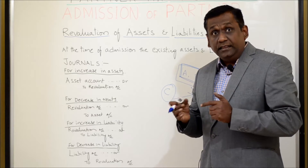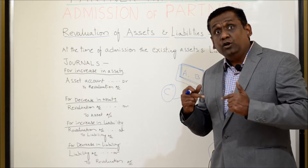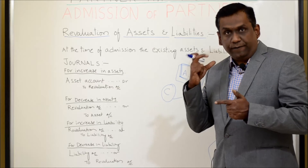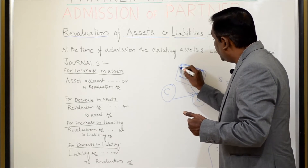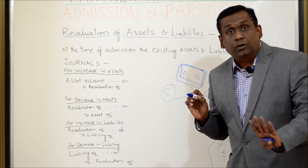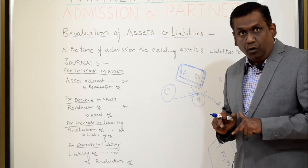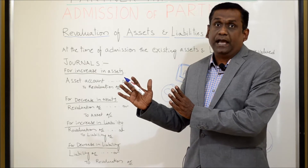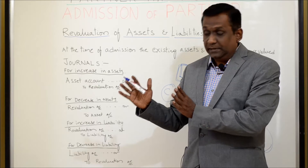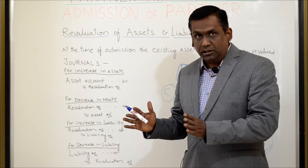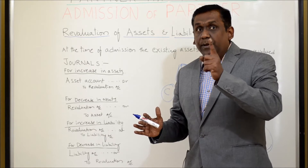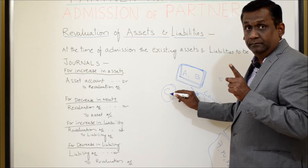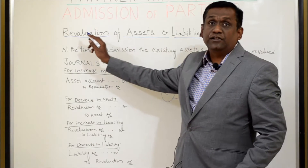Before C's admission, whatever incremental benefit the existing partners are getting has to be given to only the old partners. That is the reason why, when they have decided to admit a new partner, they revalue their assets and liabilities. Whatever benefit they get out of revaluation is distributed to the existing partners only, and the adjusted assets and liabilities will be disclosed in the balance sheet. That is why we do the revaluation of assets and liabilities before admission.